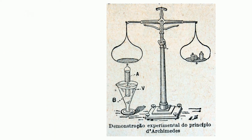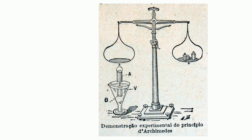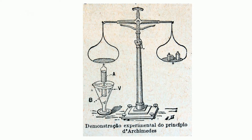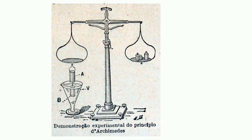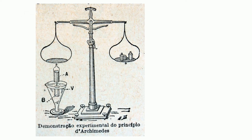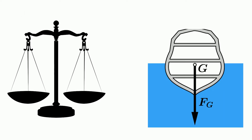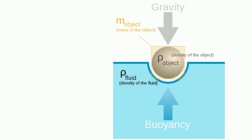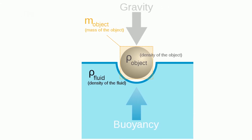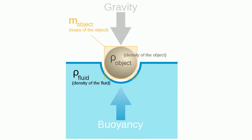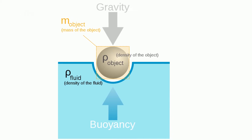The volume of displaced fluid is equivalent to the volume of an object fully immersed in a fluid, or to that fraction of the volume below the surface for an object partially submerged. The weight of that displaced portion of the fluid is equivalent to the magnitude of the buoyant force. The buoyant force on a body floating in a liquid or gas is also equivalent in magnitude to the weight of the floating object and is opposite in direction.